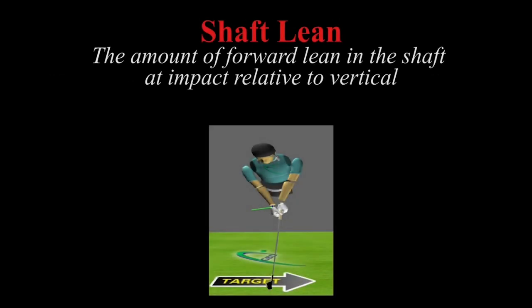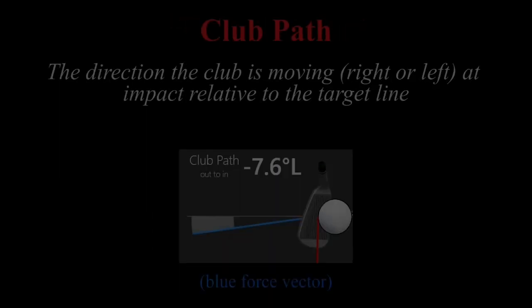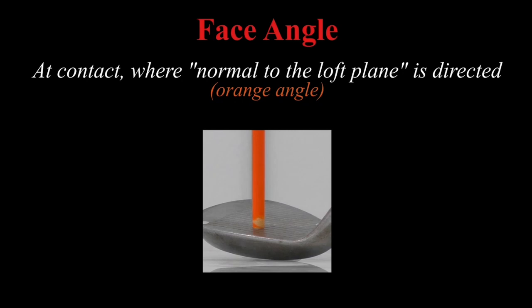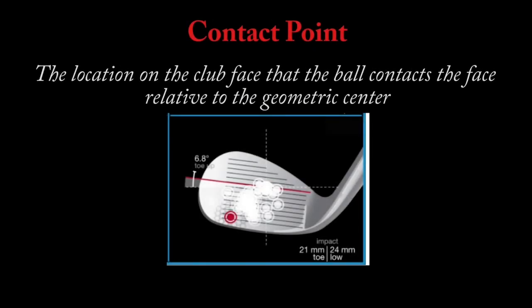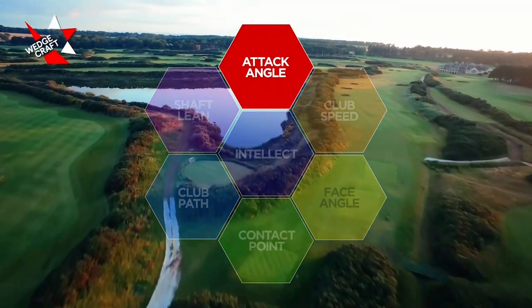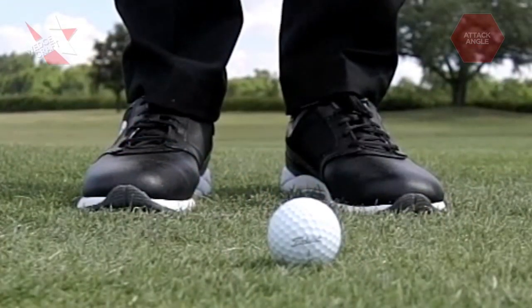Forward shaft lean is common in all wedge shots. Your ability to assess the lie and choose an appropriate shot is what we call intellect, whereas club path is the direction in the horizontal plane that the club is moving. Face angle is a complex concept in wedge play — it's where the face is actually pointing. And contact point is where you strike the ball on the club face. What follows is a more detailed pictorial description of all of those variables.